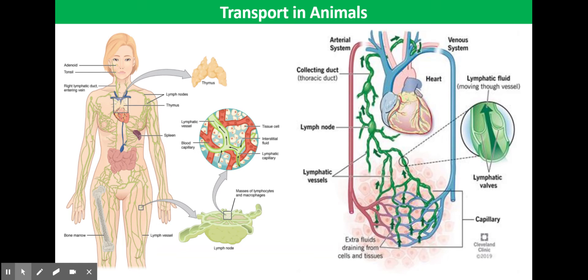However, not all the tissue fluid re-enters the blood. Some tissue fluid is directed into another tubular system called the lymph system or the lymphatic system. This drains excess tissue fluid out of the tissues and returns it to the blood system via a vein in your chest. The fluid in the lymphatic system is called lymph and is similar in composition to tissue fluid, though it contains more lymphocytes as these are produced in the lymph nodes. Lymph nodes are swellings found at intervals along the lymphatic system.